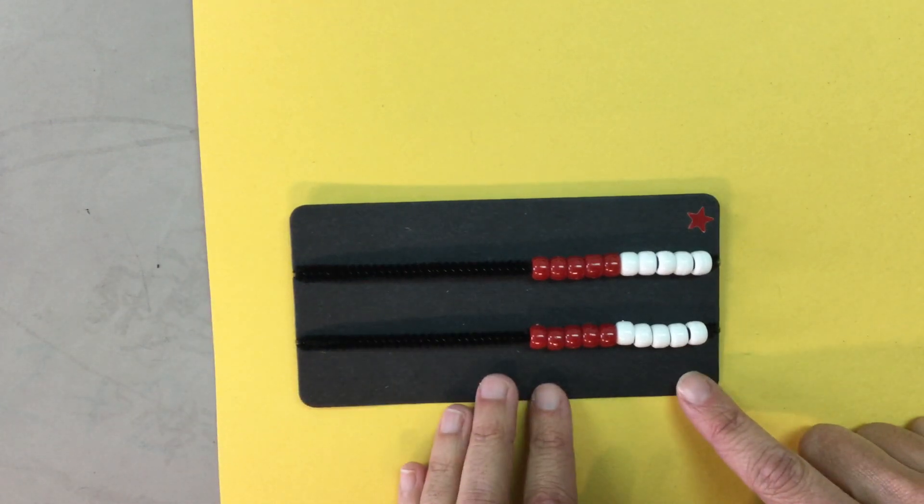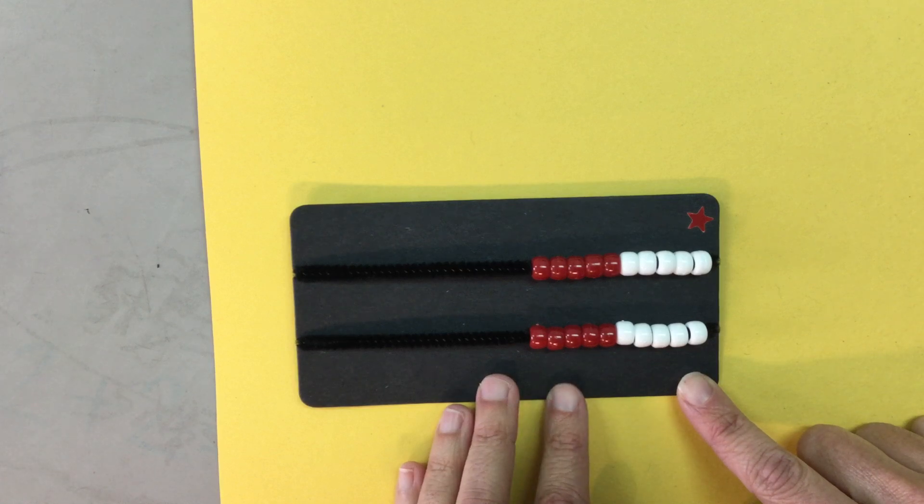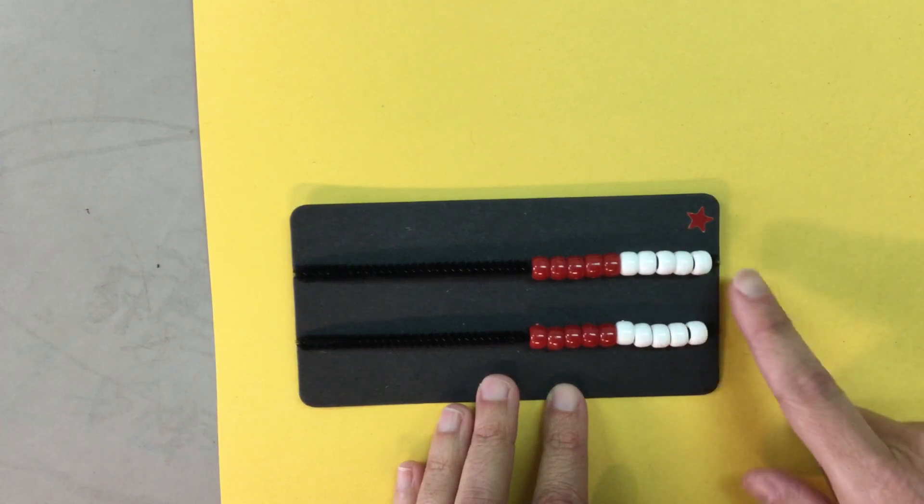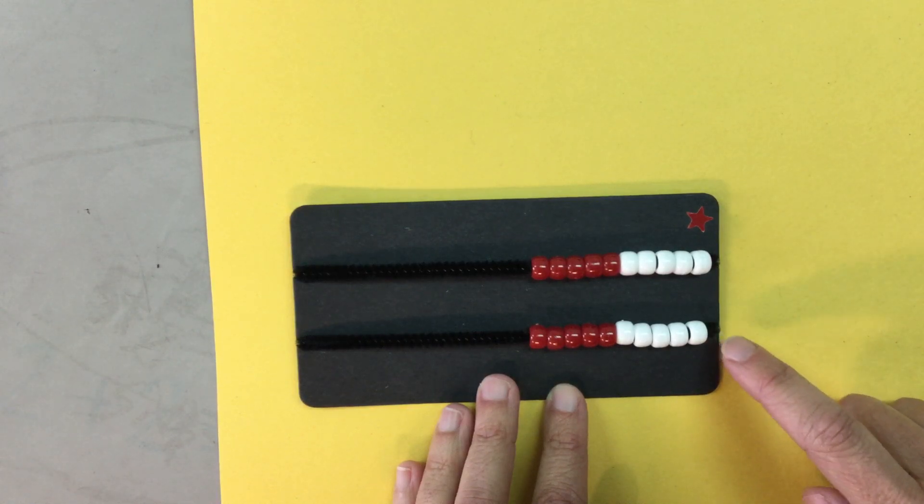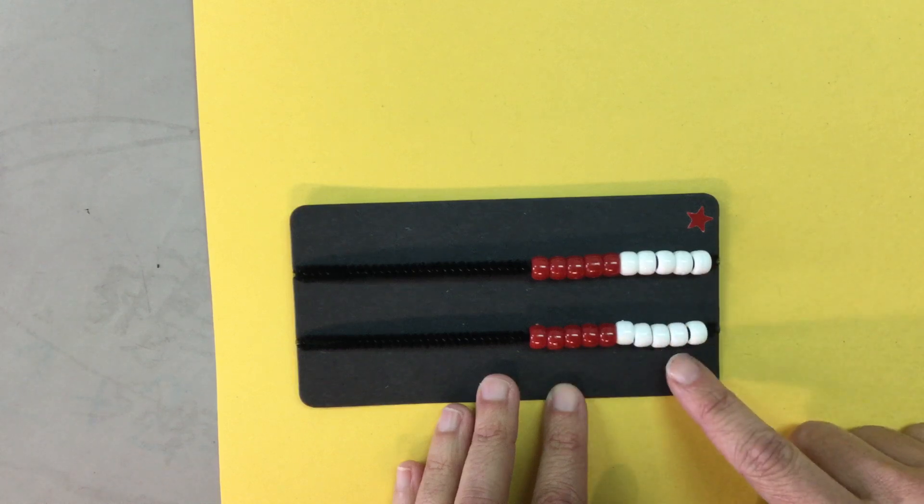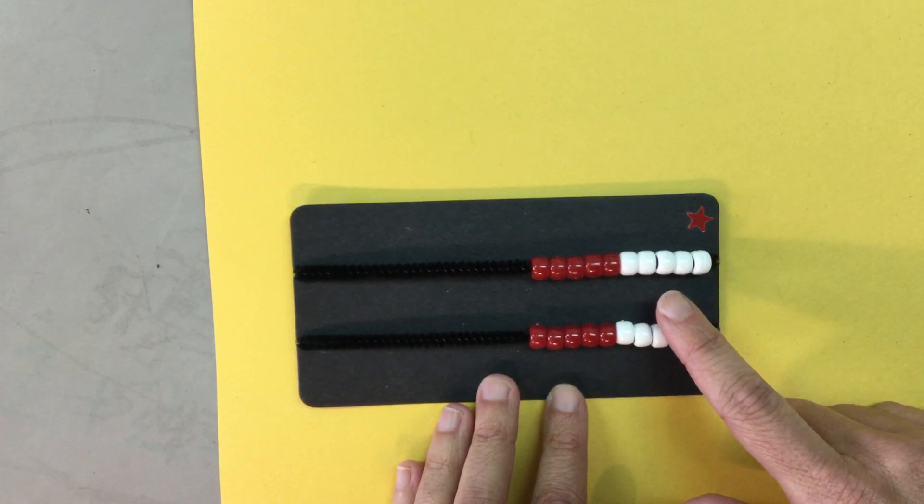So this is the starting position for the number rack. We can remember it as white on right and the stars in the sky. As you can see, there are ten beads in the top row and ten beads on the bottom row. Five of the beads are red and five of the beads are white.